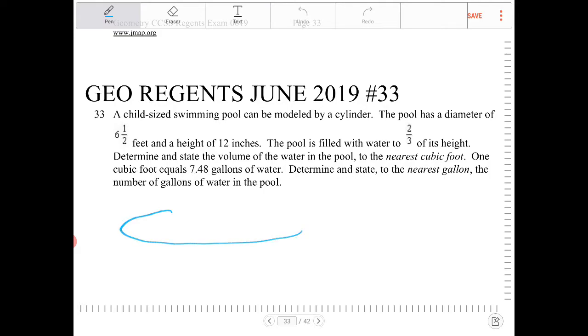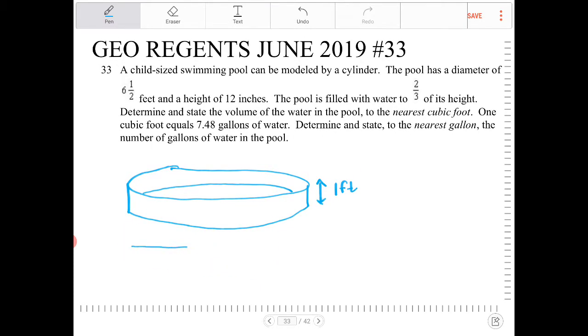So we have a pool. I've said in numerous videos it definitely helps to visualize things with art. The height of the pool is 12 inches. Let's keep all the units the same, so this would be one foot. And the diameter is six and a half feet.